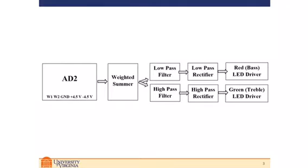Here's a block diagram of the circuit at large. The audio input will be coming from an Analog Discovery 2, or AD2. It will come in the form of a separate left and right channel. The purpose of the weighted summer is to combine the left and right channels and to produce the desired gain.